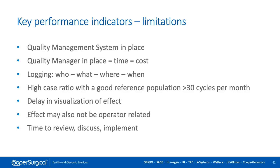There are also limitations. You need a quality management system with dedicated personnel — a quality manager — involving time and cost. Everything must be logged: who did what, where, and when. You need a sufficiently high case volume — more than 30 cycles per month in a good reference population — for consistent KPI analysis. There will be a delay in visualizing effects, so some patients may experience suboptimal quality before an issue is detected. Effects may also not be operator-related; they can come from somewhere completely different. Keep an open mind, be objective, and take time to review, discuss, and implement.